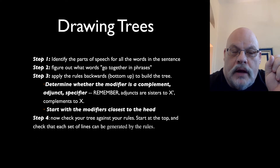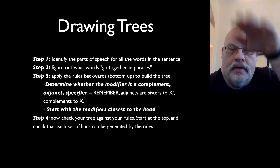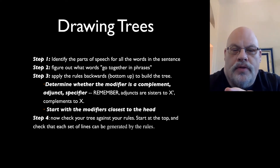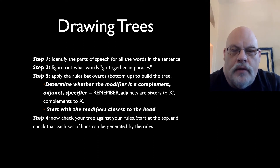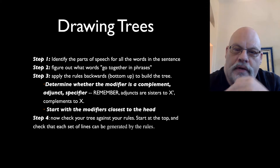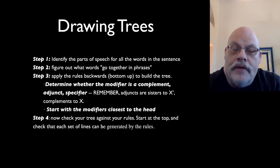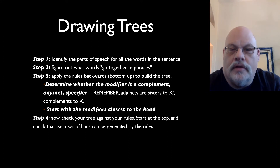Don't forget to check your trees against your rules — that's an important thing. If you're working from the bottom to the top, you want to start with the modifiers that are closest to the head, because when you move away from the head, that's when you're going up the tree. If you want to draw trees from the top to the bottom, that is also fine — you do things in the reverse order: specifiers in first, then adjuncts, then complements.